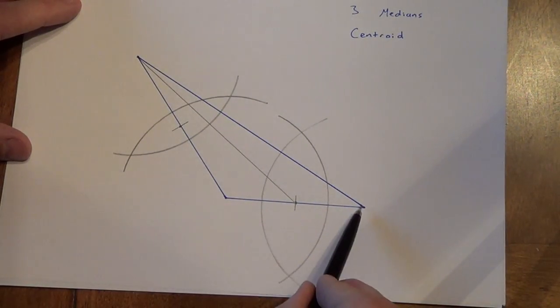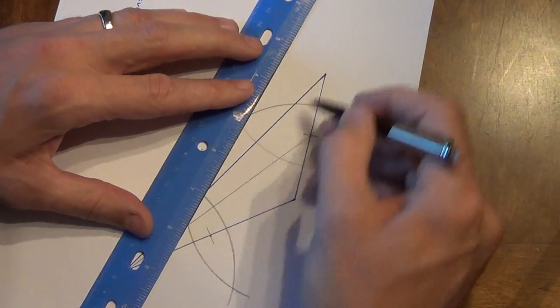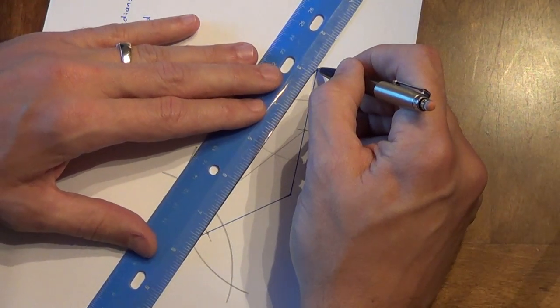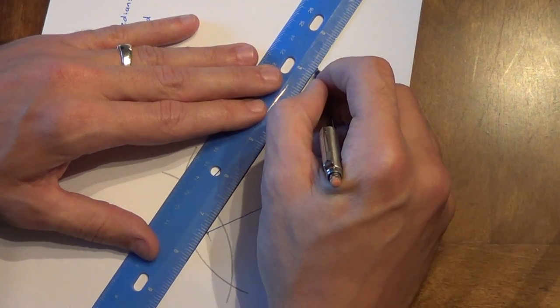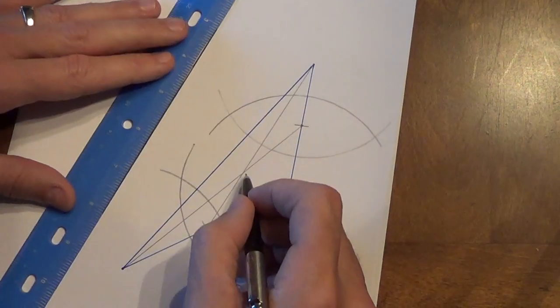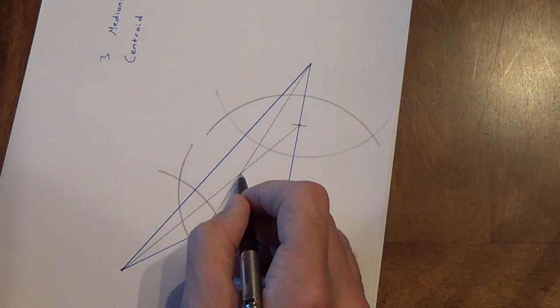That point is called the midpoint. We're going to connect it back to the opposite vertex. Once again, I'm going to connect back over to here. So from here, over to here. Get that lined up. Draw that nice long median. I see them intersecting right here.